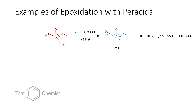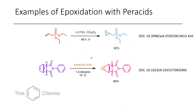Some examples include the MCPBA-mediated epoxidation of this phosphonate, formed in very high conversion, as well as the use of peracetic acid in 1,4-dioxane, which epoxidized this alkene of a Diels-Alder adduct. The Diels-Alder is a reaction we'll talk about in a future video.